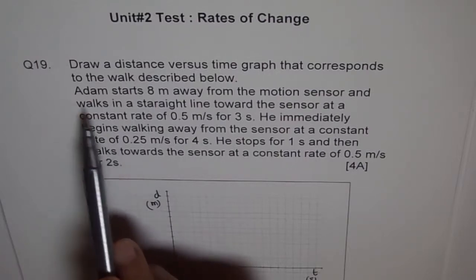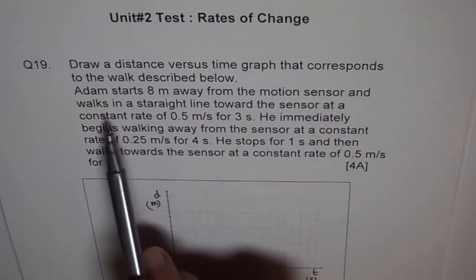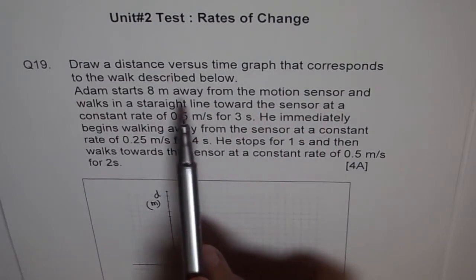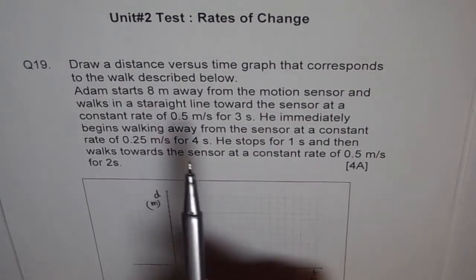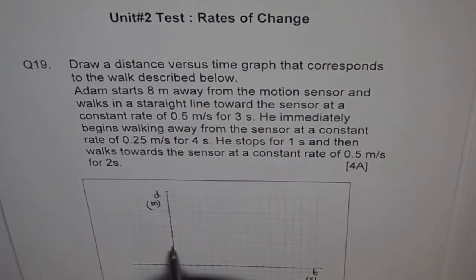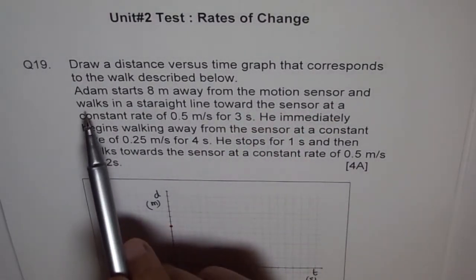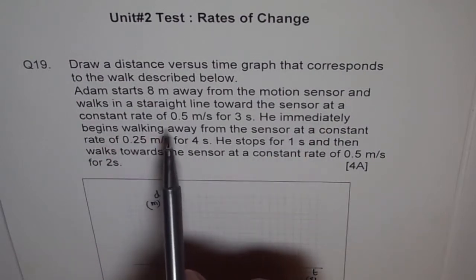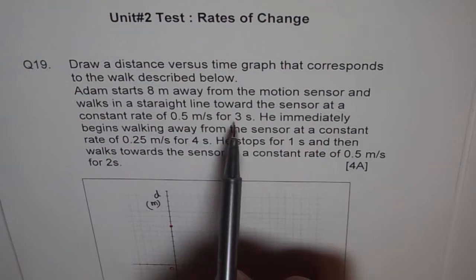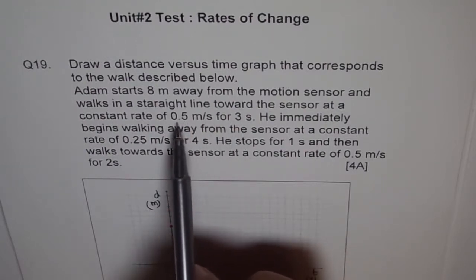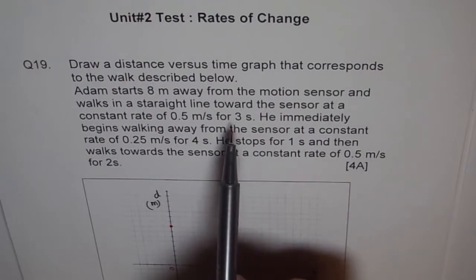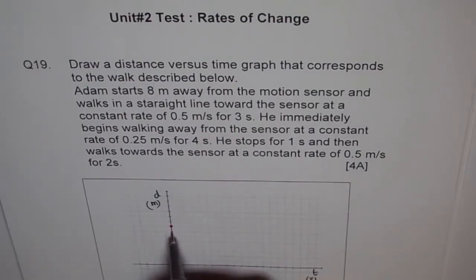First part: Adam starts 8 meters away from the motion sensor and walks in a straight line towards the sensor. So this is the farthest place from where he's coming closer. So Adam starts from 8 — we are assuming this to be 0 and each unit is 1. He walks towards the sensor at a constant rate of 0.5 meters per second for 3 seconds. So in 3 seconds, he will cover 0.5 times 3, which is 1.5 meters. So he will come 1.5 meters closer — let's say this is 1 and this is 0.5 meters closer, so he will come here.